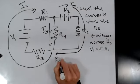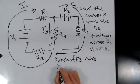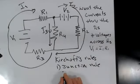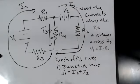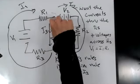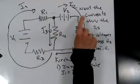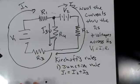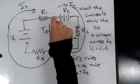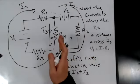Kirchhoff has two rules. The first one is called the junction rule. In this example, it's I1 equals I2 plus I3. What it says is: if you pick any junction, the current going into a junction has to add up to all the current leaving. The current going in is I1; the current leaving is I2 and I3. Whatever's going in must add up to whatever's going out — just like water in a plumbing junction. There's no hole leaking stuff out.